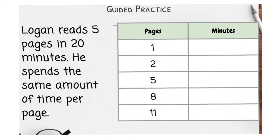So our first guided practice problem says Logan reads five pages in 20 minutes. He spends the same amount of time per page. So we're going to complete this table over here. The first thing we should do in a ratio table is put in the ratio that's in the problem. So the ratio in the problem is that Logan can read five pages in 20 minutes. So I go to five pages and I type in the 20 minutes.